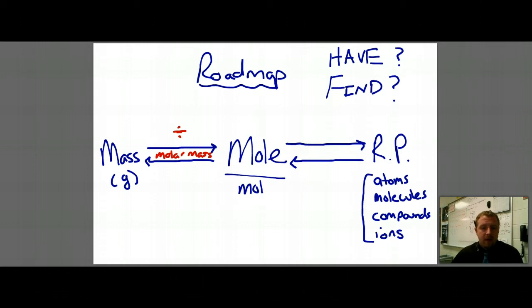If I have a mole of something and I want to know how much mass it is, then I would multiply by the molar mass. So if I'm going to moles, I'm dividing. If I'm going away from moles, I'm multiplying.